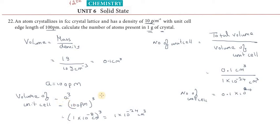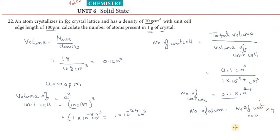Since it is an FCC lattice, there are 4 atoms per unit cell. So, number of atoms equals number of unit cells into 4. That is 0.1 into 10 to the power 24 into 4, which equals 4 into 10 to the power 23 atoms. Thank you, students.